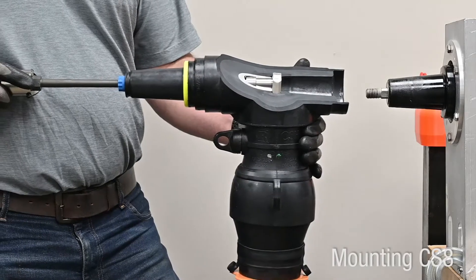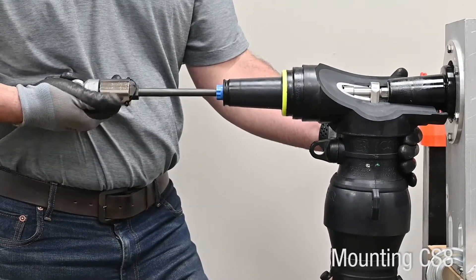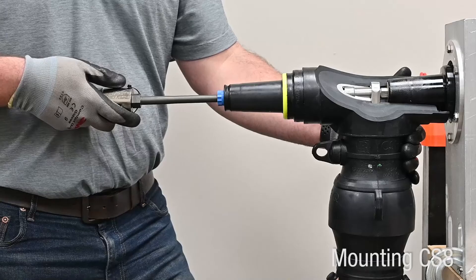Mount CS8 assembly onto mating part, lining up the hole in the lug with the stud on the mating part. Rotate tool two to three turns to start thread engagement.